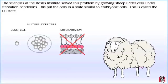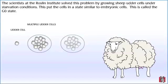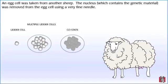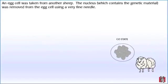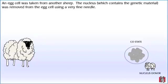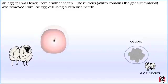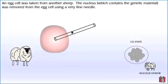The scientists at the Roslin Institute solved this problem by growing sheep udder cells under starvation conditions. This put the cells in a state similar to embryonic cells, called the G0 state. An egg cell was taken from another sheep, and the nucleus, which contains the genetic material, was removed from the egg cell using a very fine needle.